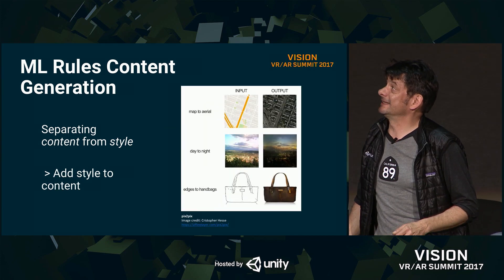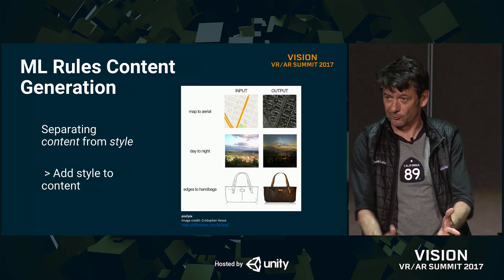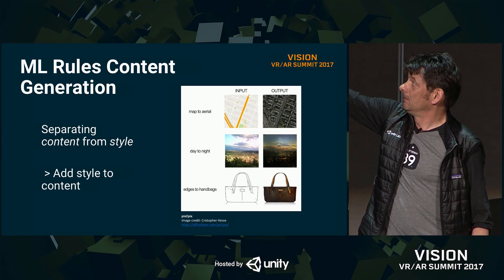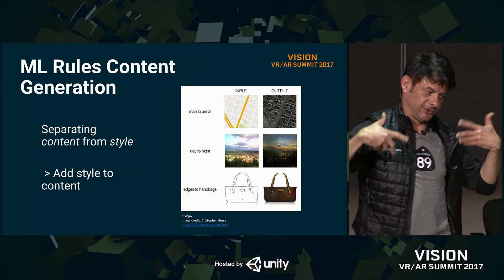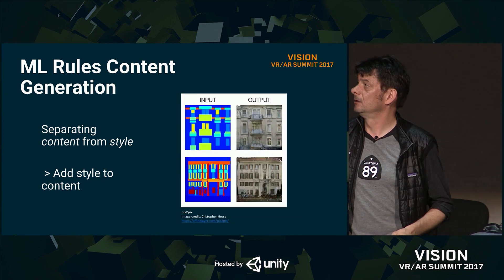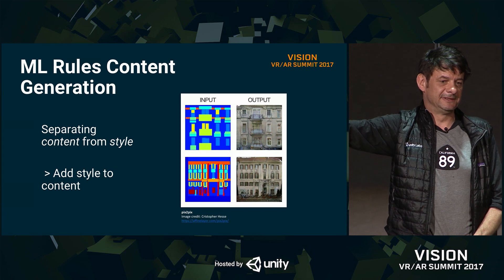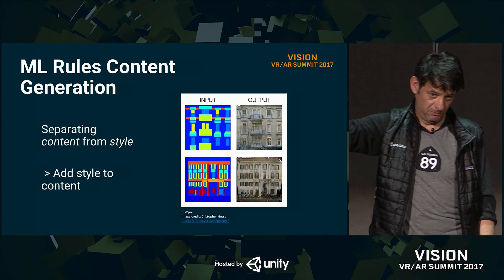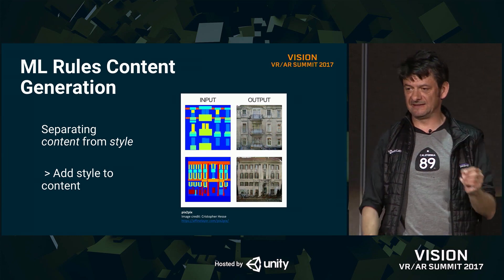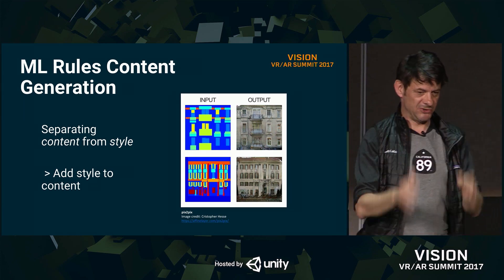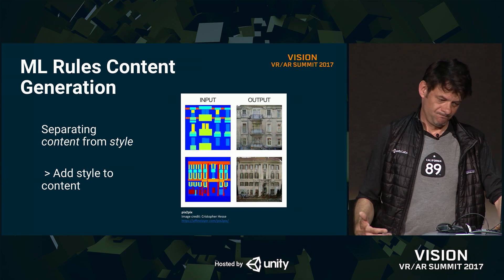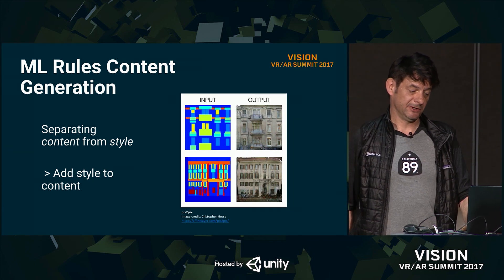If you can separate content from style, you can also add style to content — this is pix2pix. From a map, it makes an aerial picture. From a picture in daylight, it makes a nighttime version. It creates a bag from a drawing. And this one is really awesome: you just describe your building in terms of big rectangles and deep learning generates a photo-realistic result. The potential for this is absolutely huge — you could describe a city and express it in any style: medieval, modern, sci-fi. Same building, different styles. A lot of the artistic work is done by the network.